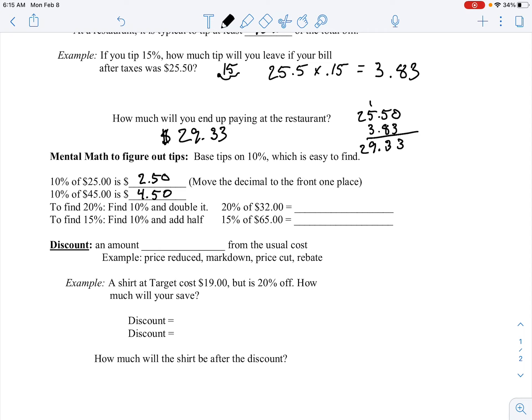So to find a 20% tip, we can just find 10% and then double it. So 20% of $32, well 10% of $32 will be $3.20. So that means that 20% will be $6.40.